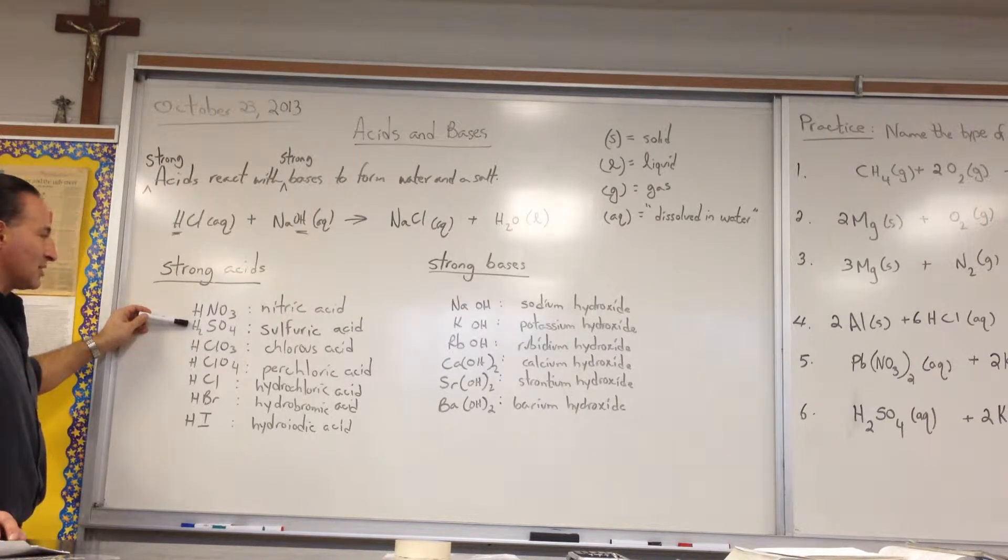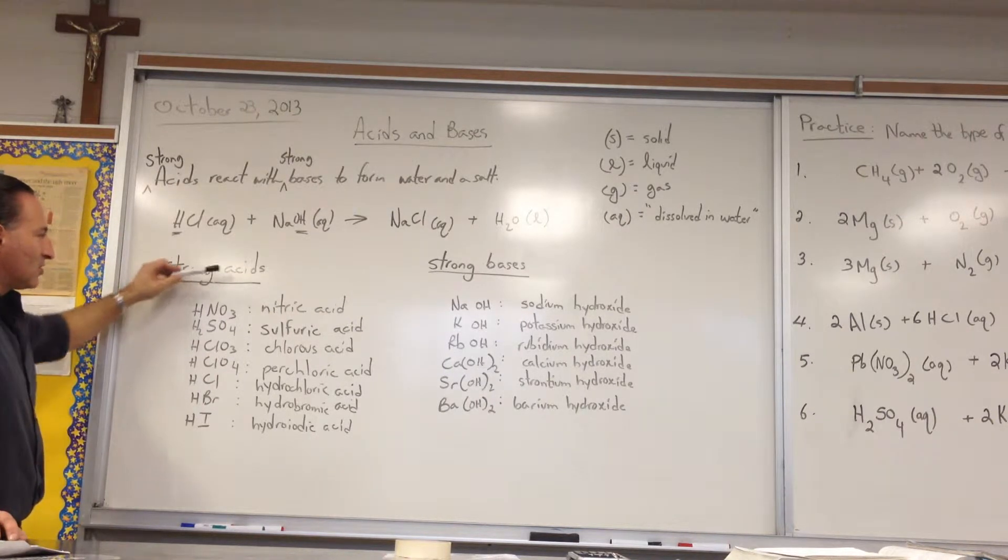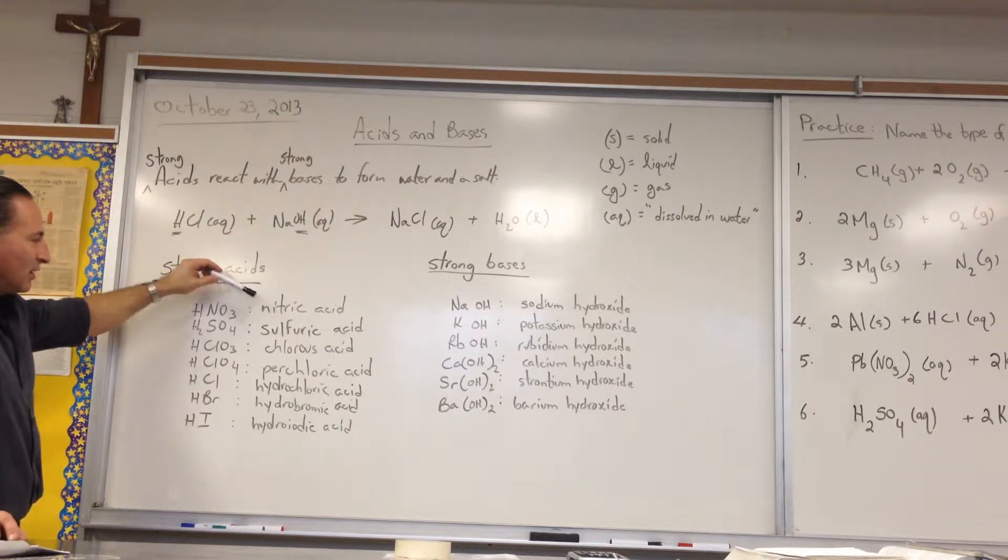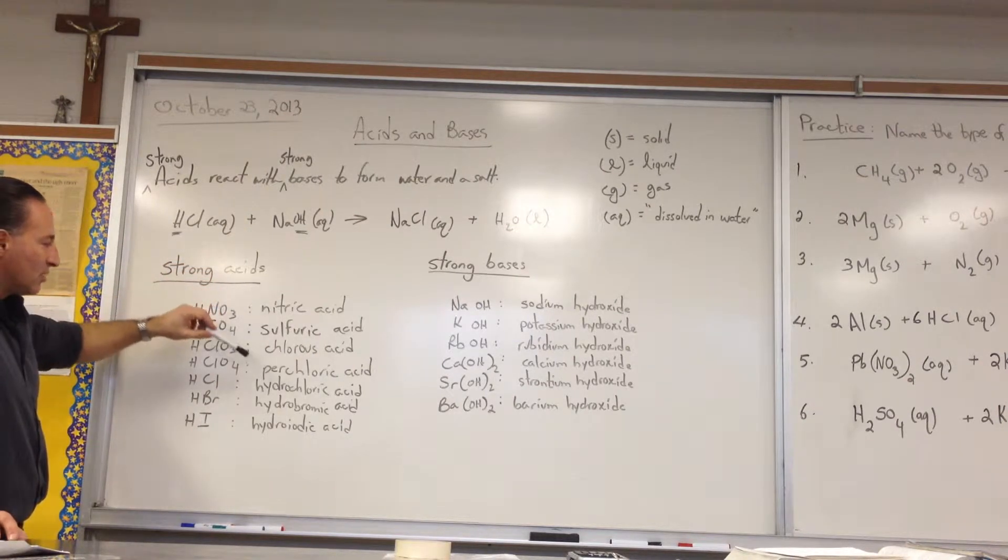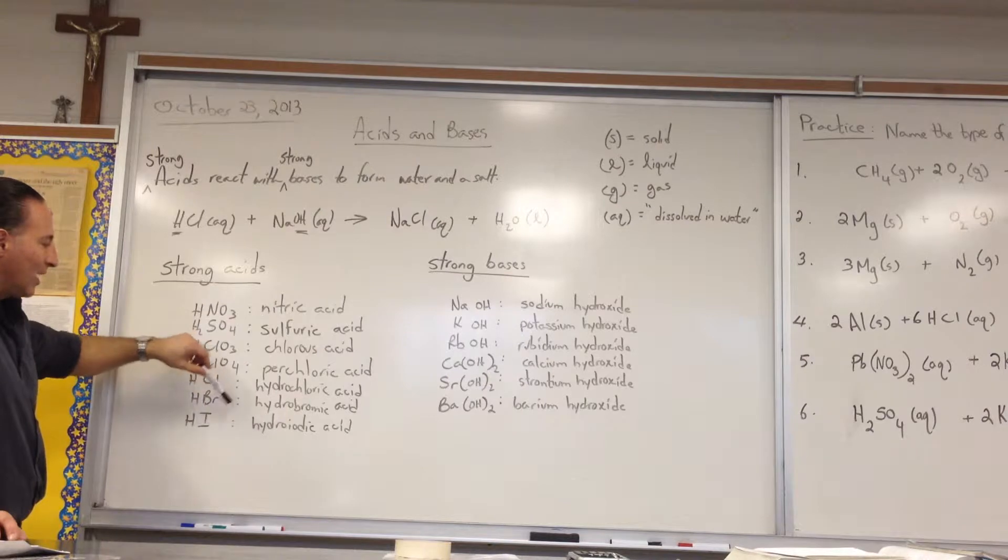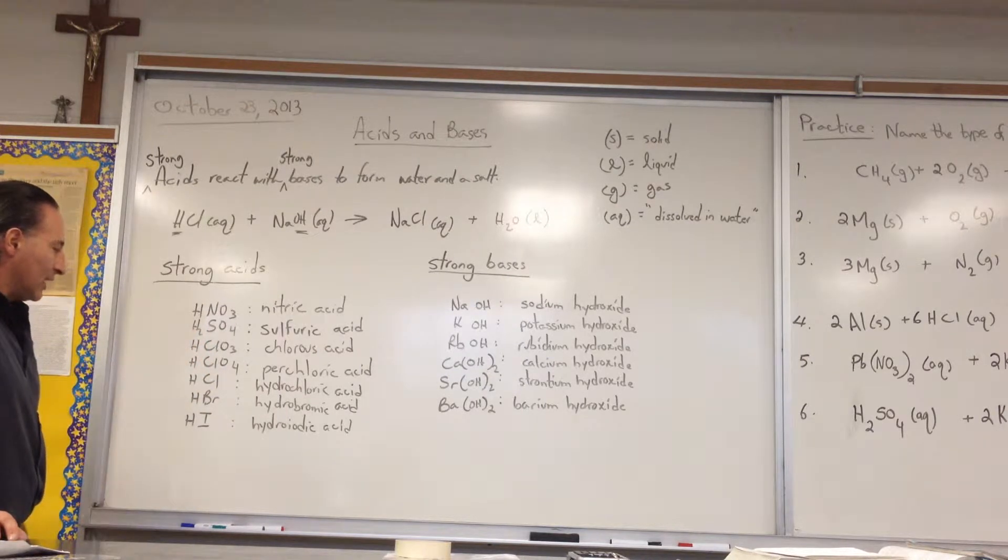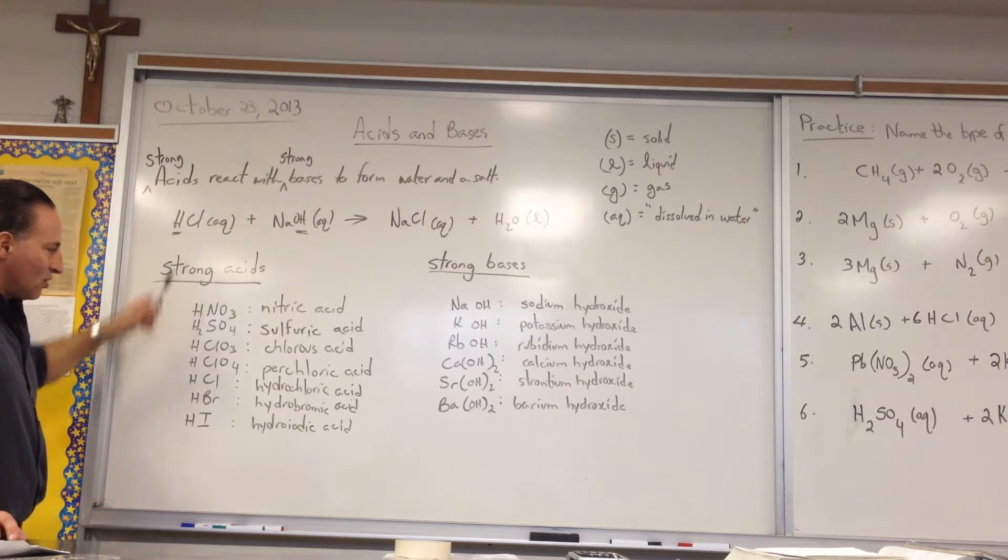Sulfuric gets two H's because it's a diprotic acid. So the strong acids are nitric, sulfuric, chlorous, perchloric, hydrochloric, hydrobromic, and hydroiodic acid. And these are all the strong acids that we know.